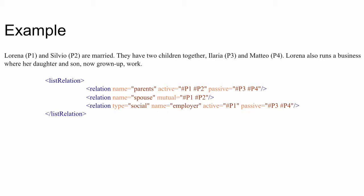This is how we could encode the relationships in this family. We have a list relation element sitting in the TEI header, with three different relations. First, the marriage relation between the parents, which is a mutual one, concerning P1 and P2 — Lorena and Silvio. Second, the parent relation, where in the active role we have the parents P1 and P2, and in the passive part we have the children P3 and P4 — Hilaria and Mateo.